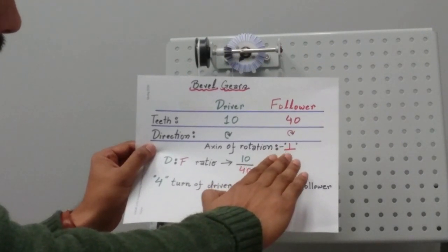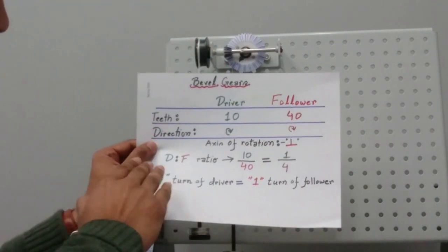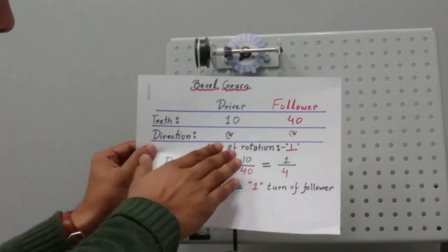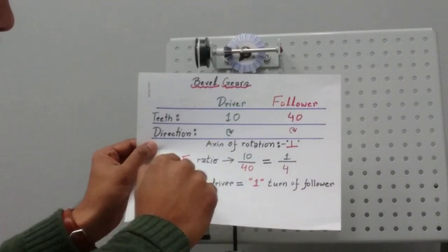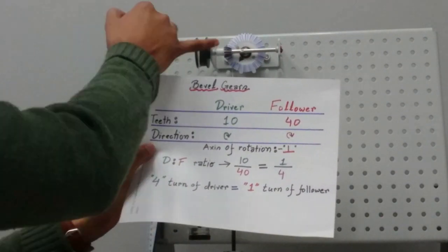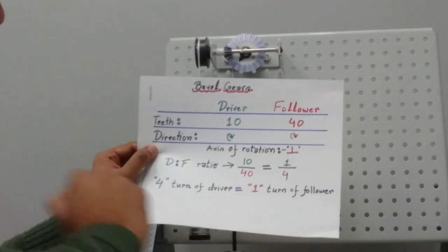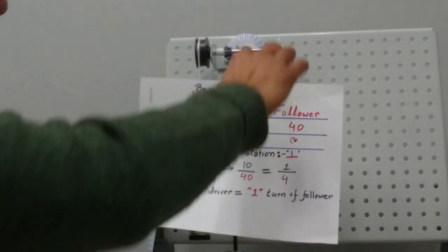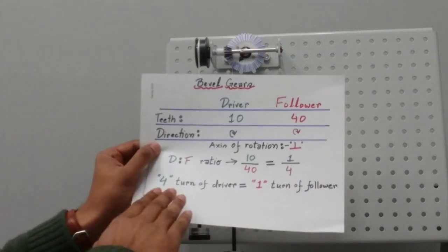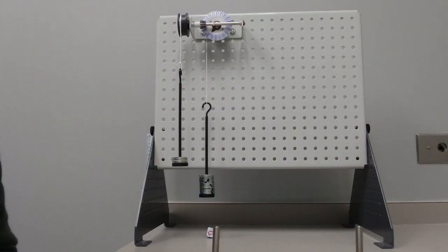So the axis of rotation of the driver and follower are 90 degrees. In our setup, if we take the ratio of driver to the follower, we'll have 10 over 40, which is 1 over 4. That means 4 turns of the driver gear will be equal to 1 full turn of the follower gear.